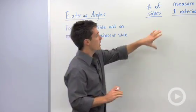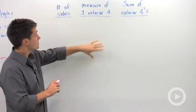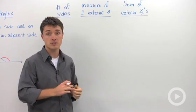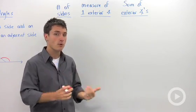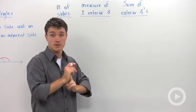To do that, let's look at a table. I've separated it into three parts: the number of sides, the measure of one exterior angle, and the sum of all of the exterior angles. We're going to start with regular polygons, which means sides are the same and the angles are the same.